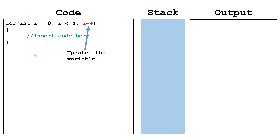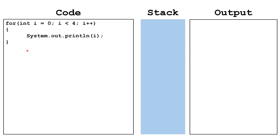Finally, the update for the variable will happen at the end of each cycle of the for loop. In this case, i will be incremented by one. Let's add some code inside the body of the loop. In this case, we're going to print out the value of the counter variable i.